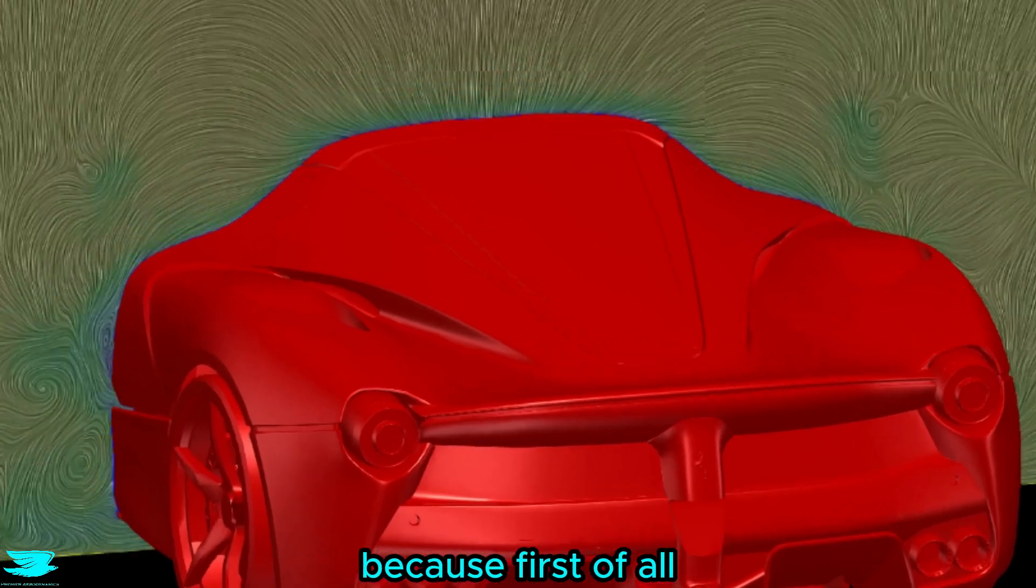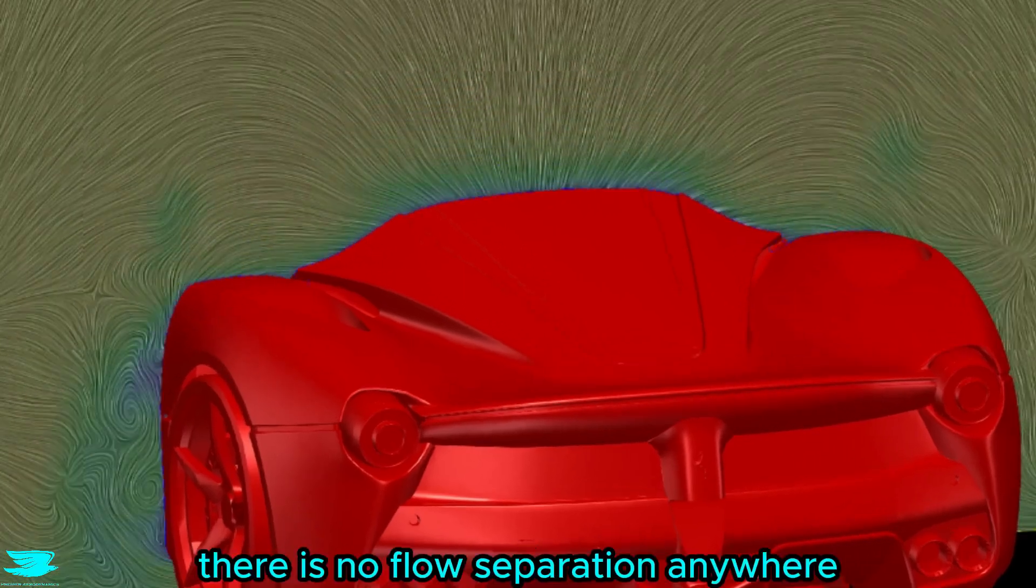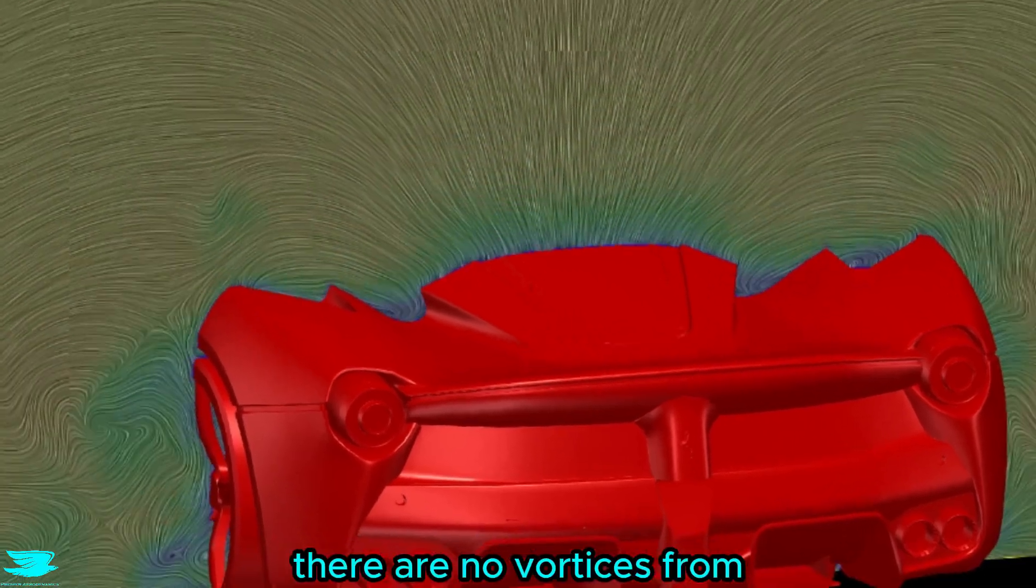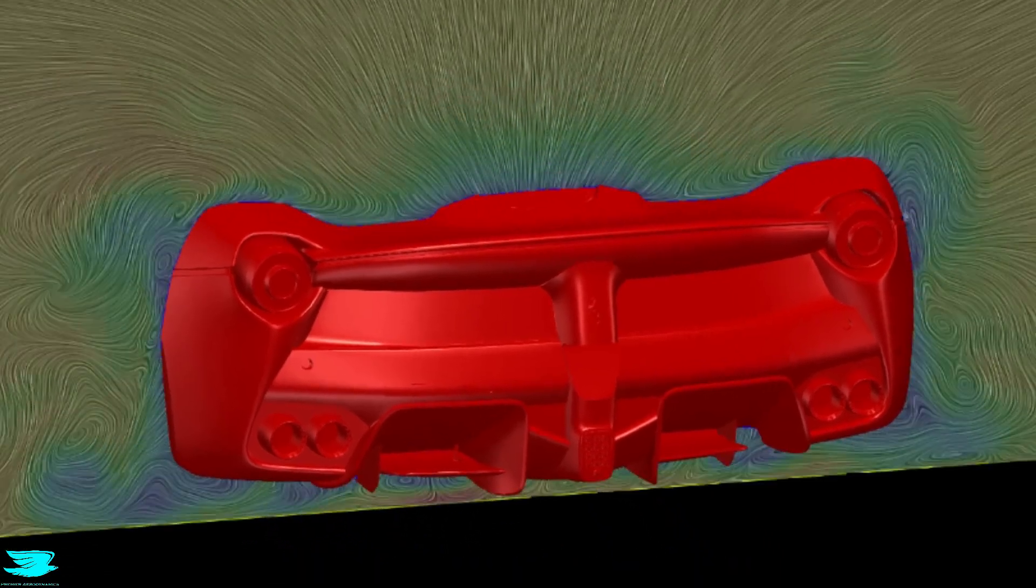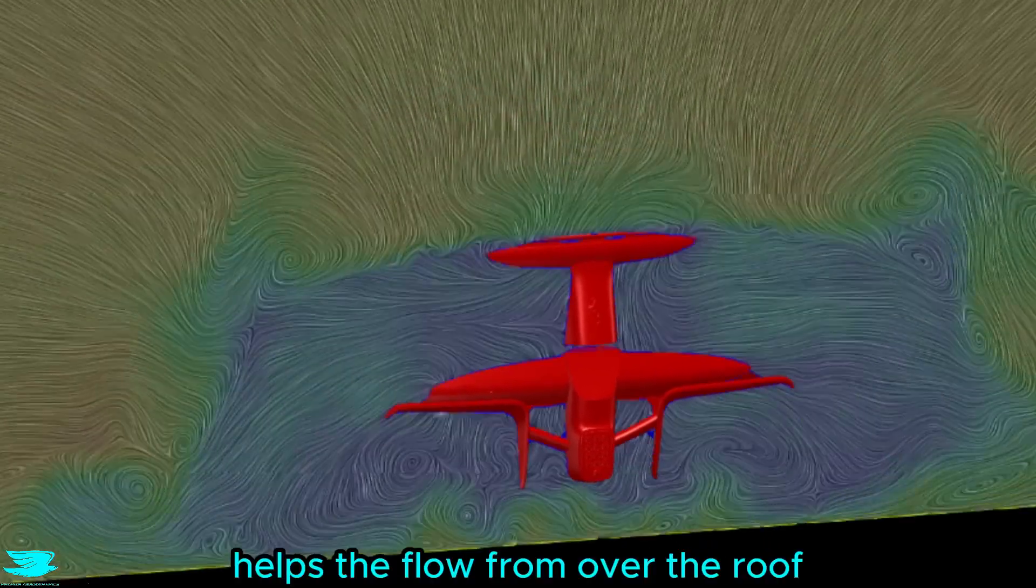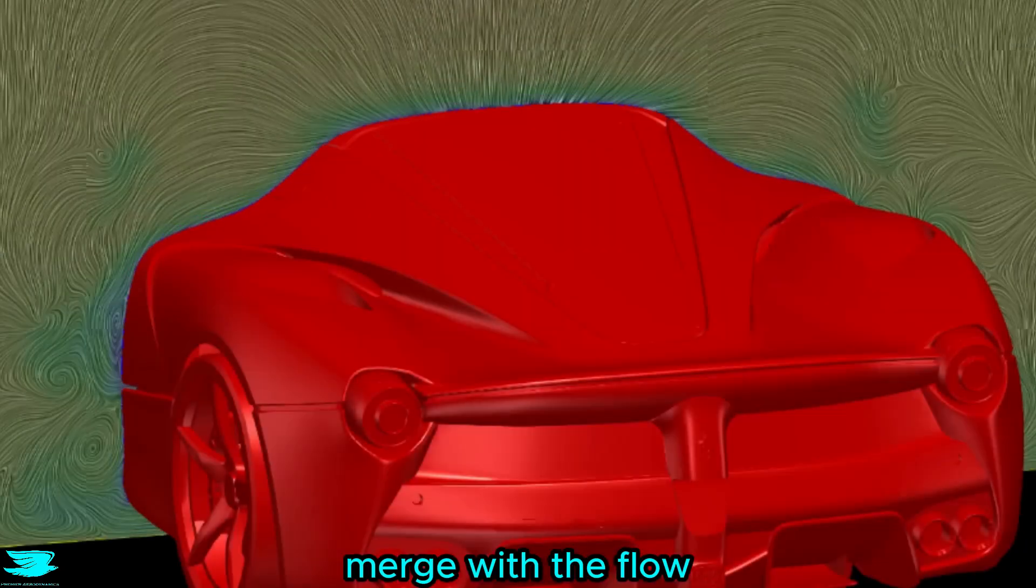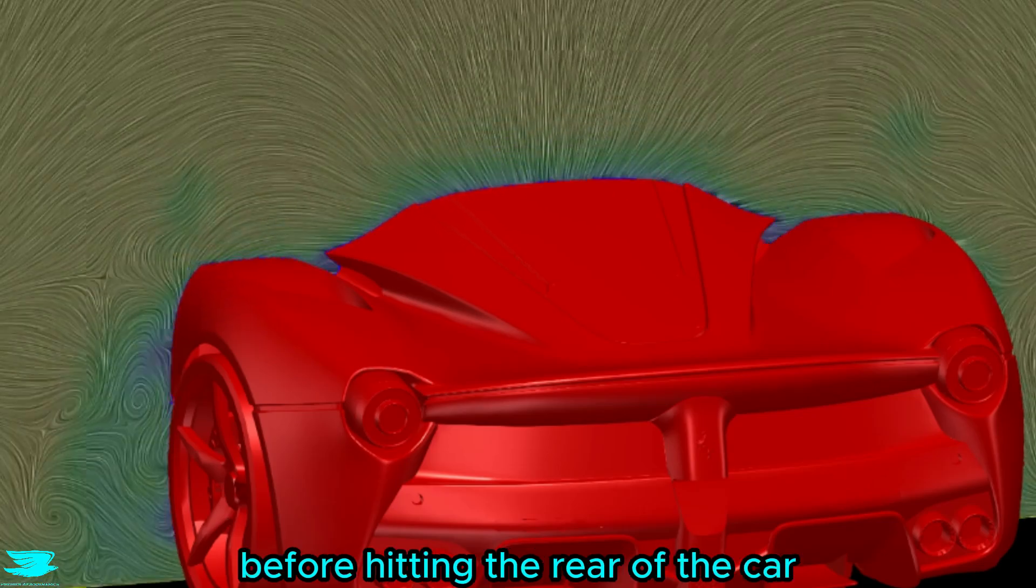The roof is incredible because first of all, there is no flow separation anywhere. Then on top of that, there are no vortices from the A pillars or the C pillars, and the rear taper of the roof helps the flow from over the roof merge with the flow from around the windows before hitting the rear of the car.